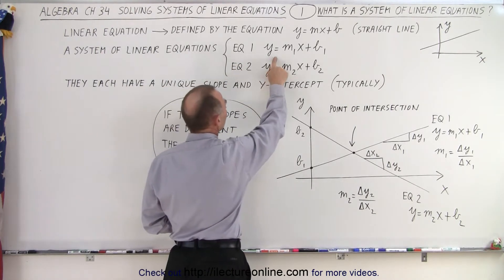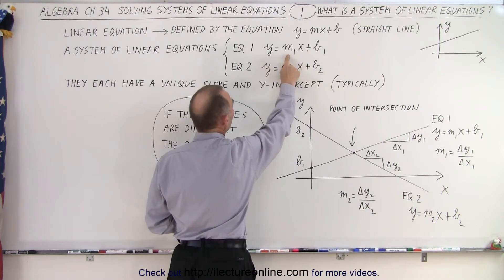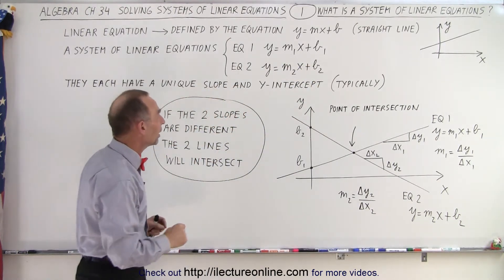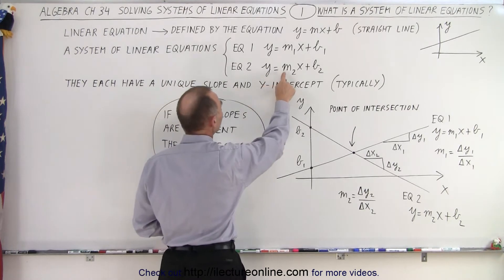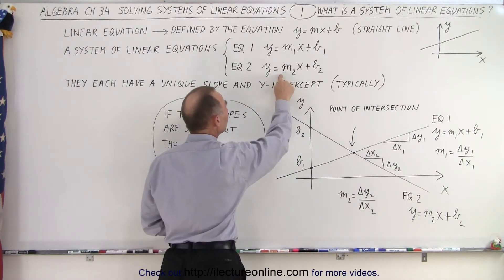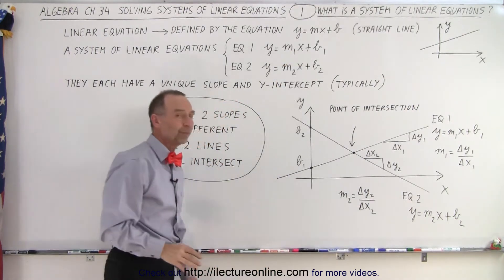So here we have y equals mx plus b, but we have an m1 and a b1, because those are specific to that equation. And our second equation is y equals m2x plus b2, because the m2 and b2 for this equation is different than m1 and b1 for that equation.